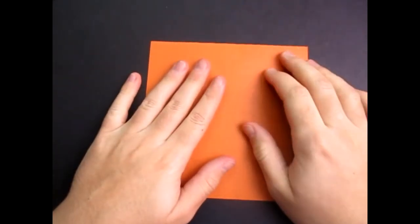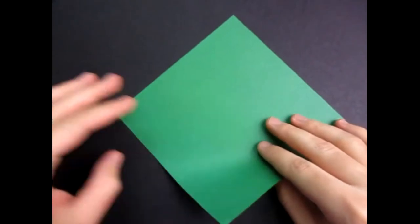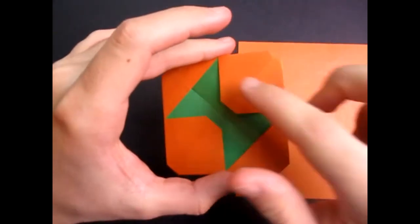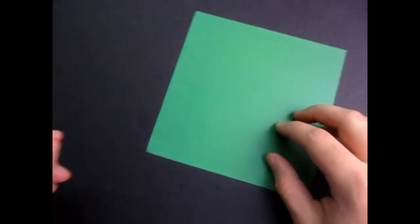Alright, so for this model I'm going to use a square sheet of origami paper that's orange on one side and green on the other. So I'll end up with an orange flicker with a green bowtie, alright? But you can use a sheet of printed paper cut square.